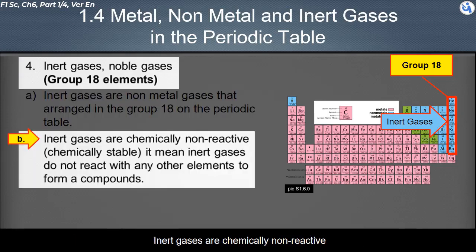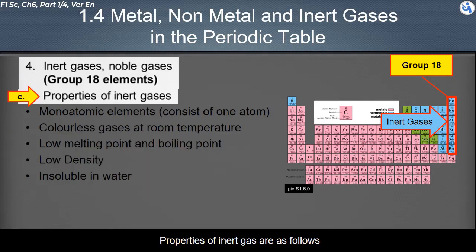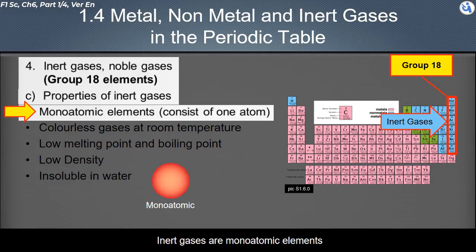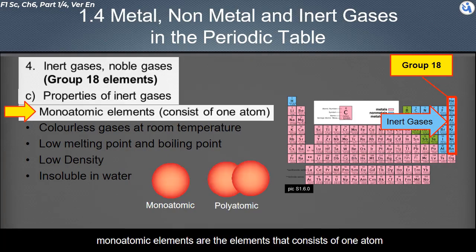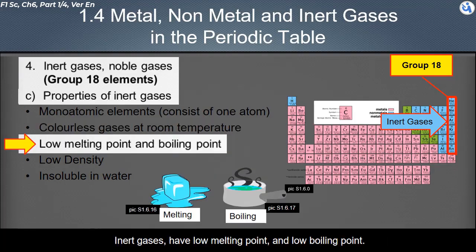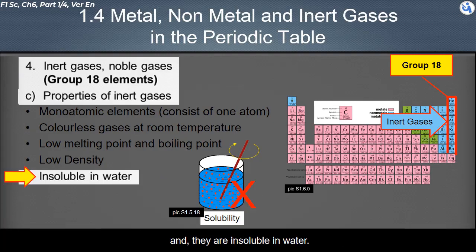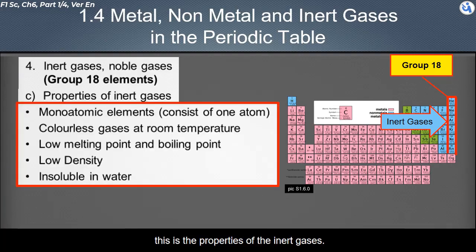Inert gases are chemically non-reactive — in other words, they are chemically stable. This means inert gases do not react with any other elements to form compounds. The properties of inert gases are as follows: they are monoatomic elements, meaning each consists of a single atom; they are colorless gases at room temperature; they have low melting points and low boiling points; they have low density; and they are insoluble in water.